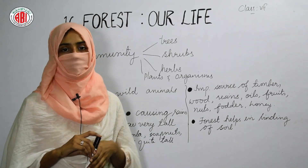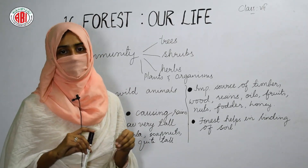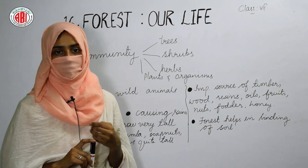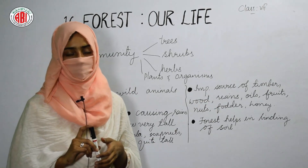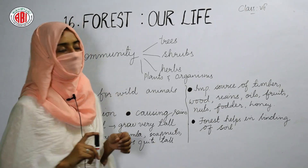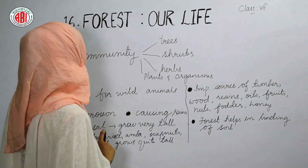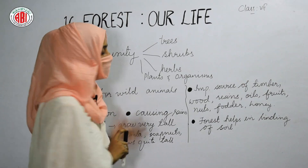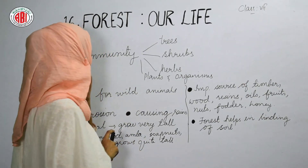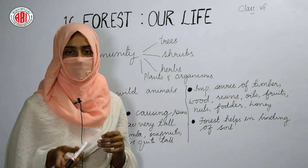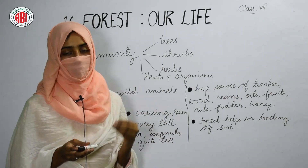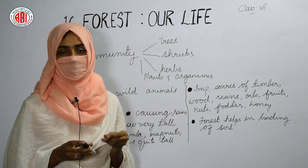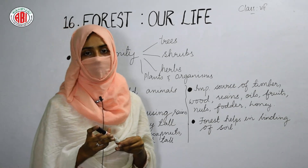Forest is a community in which trees, shrubs, herbs, plants, and organisms are all present. It is a large area that absorbs gases like carbon dioxide, and in the soil of the forest there are many minerals and nutrients absorbed by trees and plants. Along with plants, shrubs, and trees, different insects, worms, and other small creatures are living in the forest.